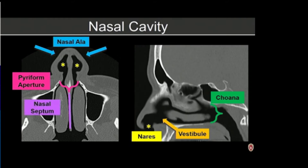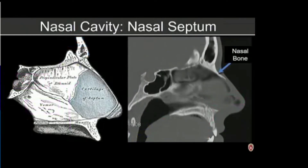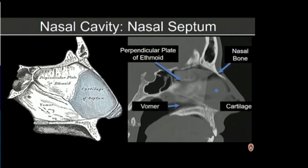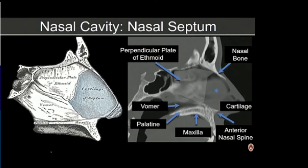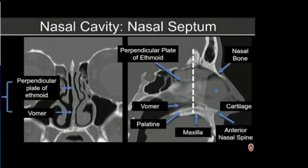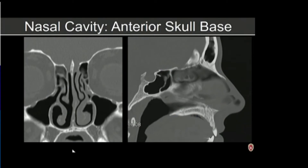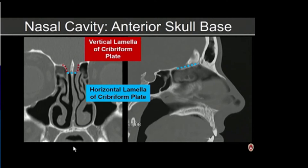The nasal cavity is divided into two compartments by the nasal septum, which is made up of cartilage and bone. Anteriorly we have the cartilaginous portion, and posteriorly the osseous part made up of the perpendicular plate of the ethmoid superiorly and the vomer inferiorly. The vomer attaches to the hard palate at the level of the maxilla and palatine bone; the anterior part of the hard palate is the anterior nasal spine. On coronal imaging we can profile the perpendicular plate of the ethmoid superiorly and the vomer inferiorly.